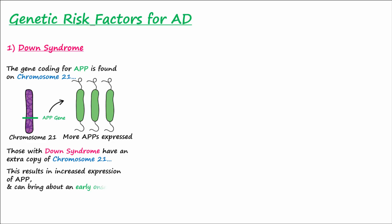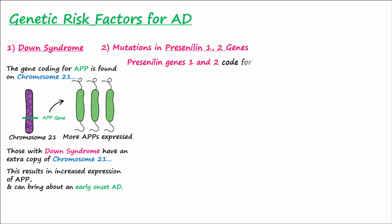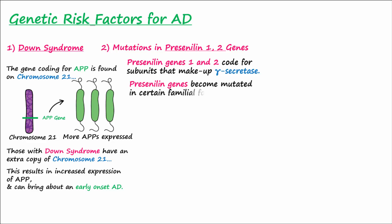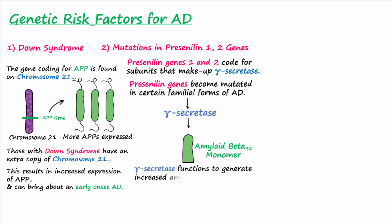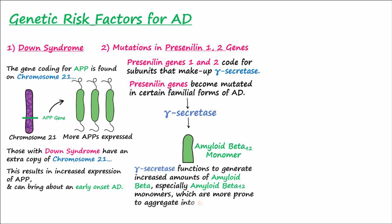Mutations in other genes, including presenilin 1 and 2, which code for subunits that make up gamma secretase enzymes, also increase the risk. Mutations in these genes occur in certain familial forms of AD and result in a gain of function that causes gamma secretase to generate increased amounts of amyloid beta, especially amyloid beta 42, which is particularly prone to aggregate and form more amyloid plaques.